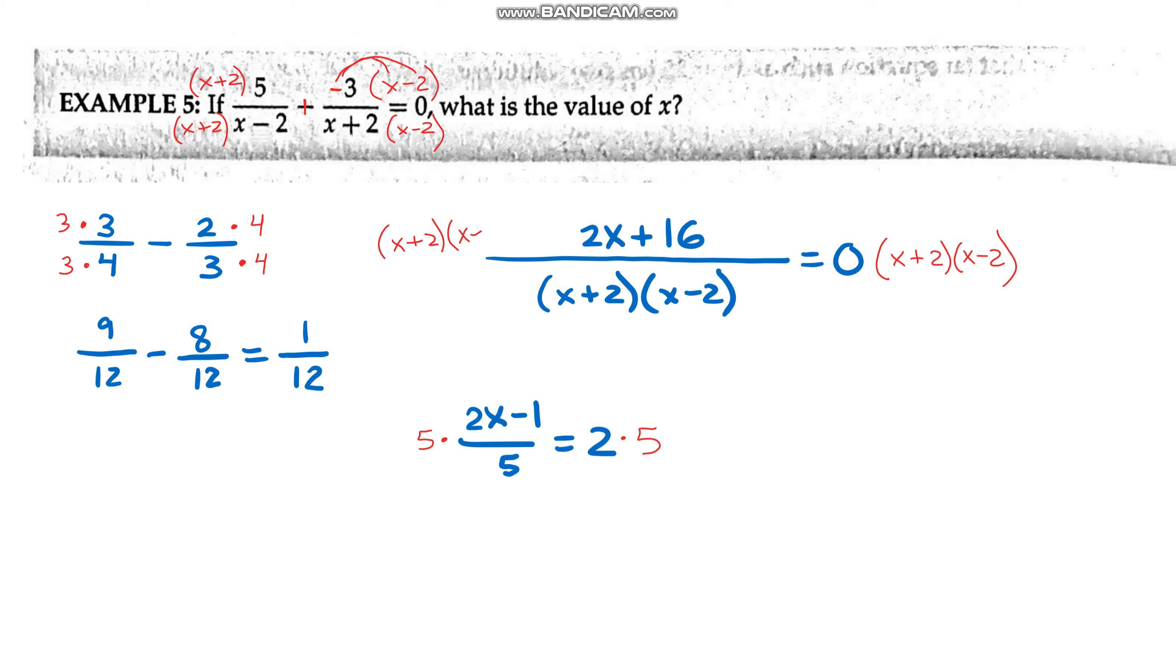So while this cancels out over here, this just still ends up equaling 0, and we end up with 2x plus 16 equals 0. And then of course you can easily solve from there, and x would equal negative 8. But knowing how to do expressions is super important on the SAT, and that's the first example that I used to introduce it.